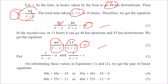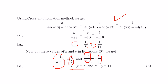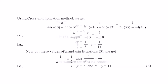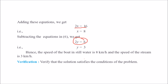Solving these by cross multiplication gives values of u and v. Since u equals 1/(x minus y) equals 1/5, we get x minus y equals 5. Since v equals 1/(x plus y) equals 1/11, we get x plus y equals 11. Adding these two linear equations: 2x equals 16, so x equals 8. The speed of the boat in still water is 8 km/h and the speed of the stream is 3 km/h.